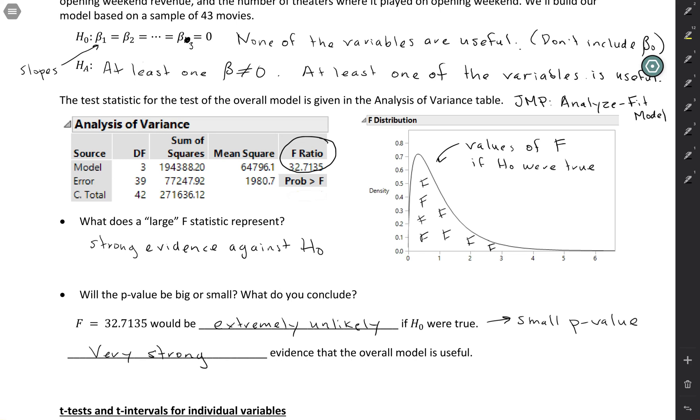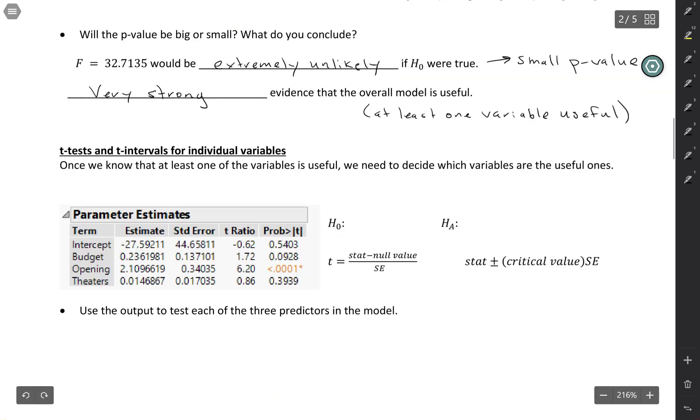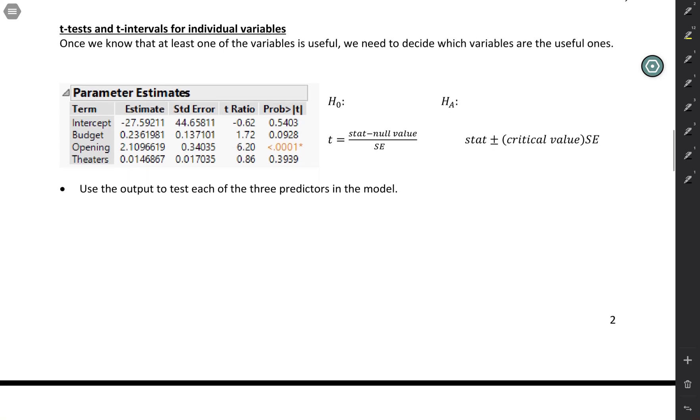So remember, all this is actually telling us is that at least one variable in the model is useful. That's not immediately super helpful because you don't know which of these variables is actually useful for making predictions. So that's where t-tests and t-intervals come in. We're going to use those to analyze the individual variables.